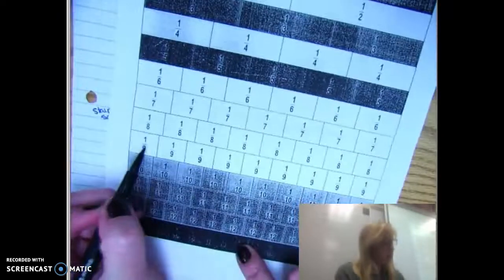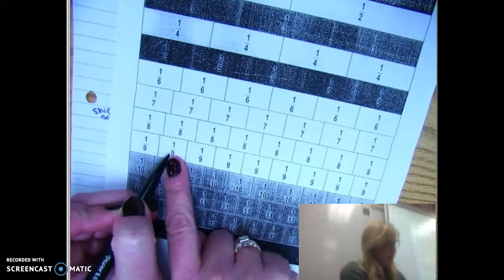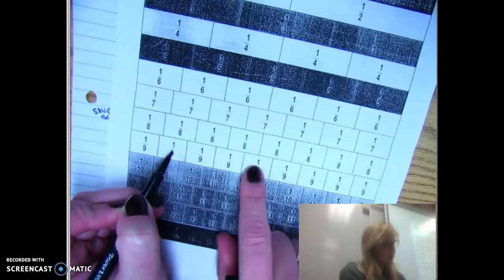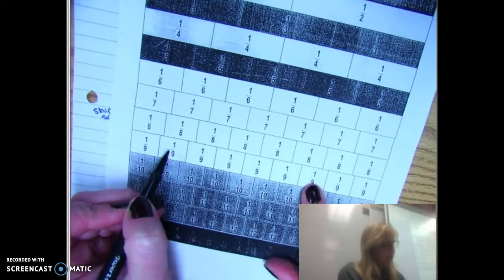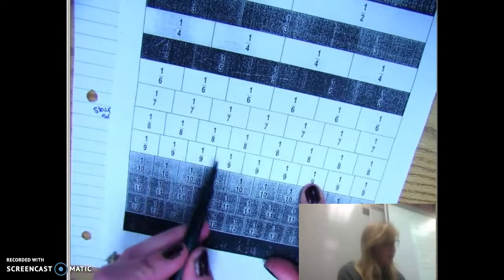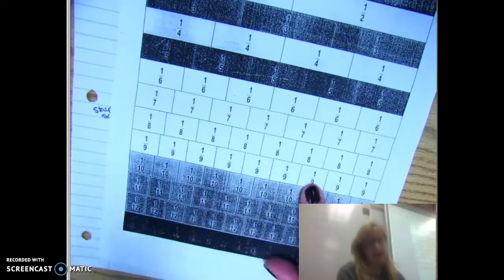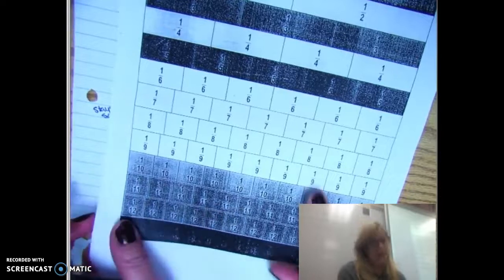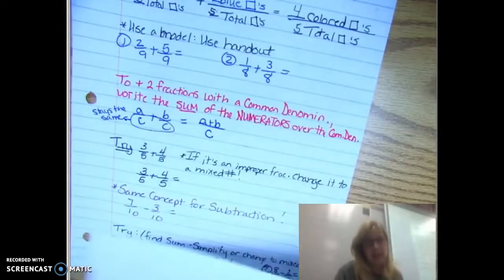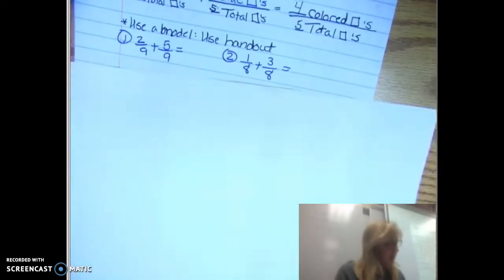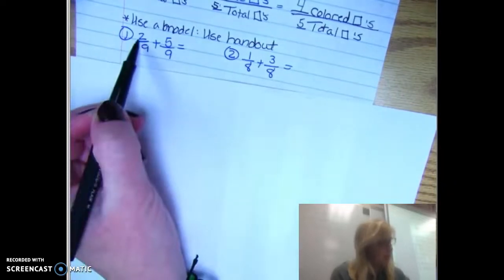So if I have two ninths and then I count one, two, three, four, five more ninths, I count a total of one, two, three, four, five, six, seven of the nine that I've eaten or used or whatever I'm calculating here.